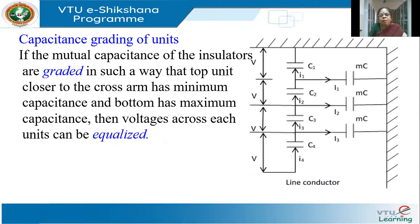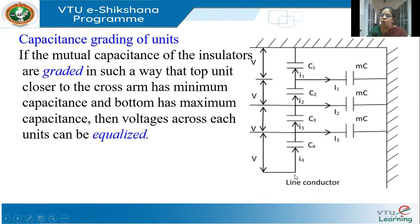The other method is grading of the insulator units, called capacitor grading. That means we don't use identical discs. We ensure that if all the mutual capacitances are equal, then we have unequal voltage distribution. So if we want equal voltage distribution — voltage V across all of them — then we must determine how the capacitances should be designed. That is the question in grading.